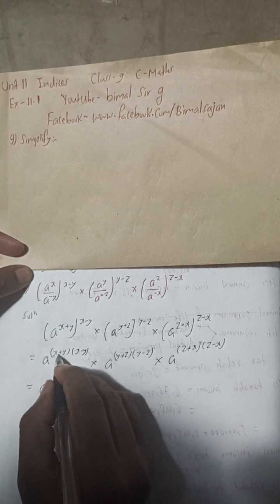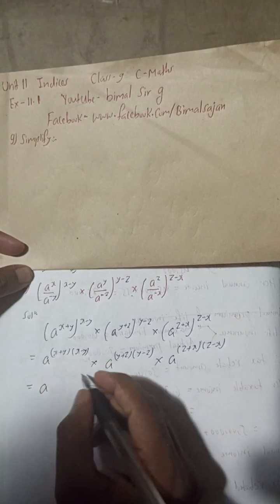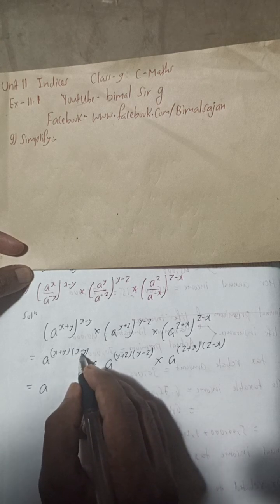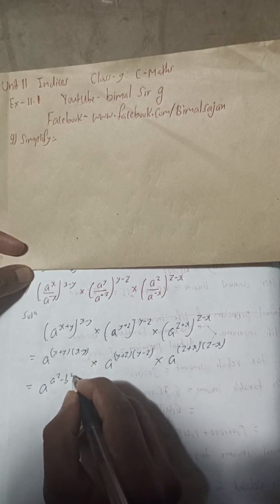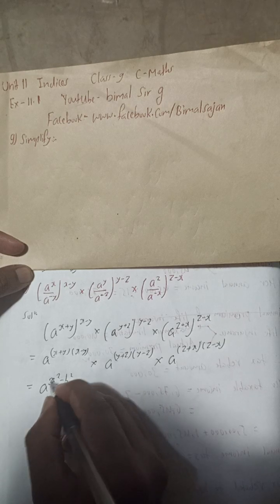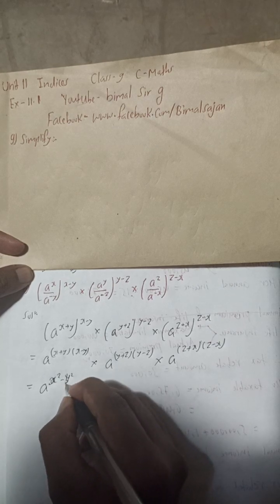So this is here a to the power, this is x plus y into x minus y. This is formula for a plus b into a minus b is equal to a squared minus b squared. Sorry, this is here x squared minus y squared.